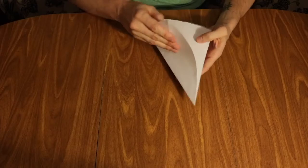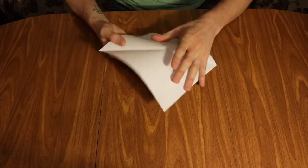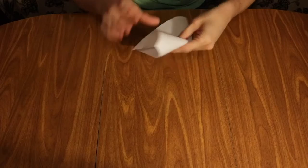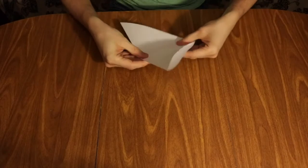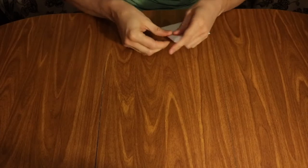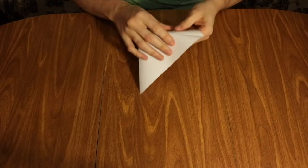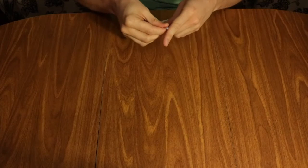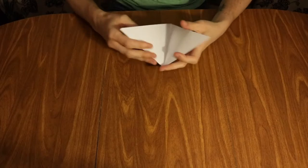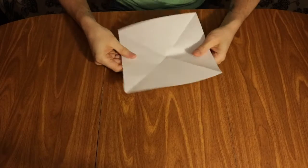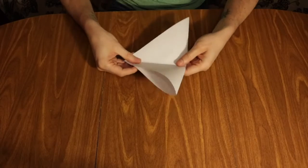Once we have our square you can open it up and we are going to fold it from corner to corner on both sides. So we should have a big X of folds going across the center of the paper. When you're doing these folds you want them to line up edge to edge and the corners to be bisected evenly by the fold.